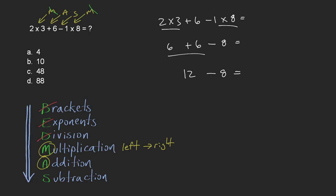And so what we've done is we've dealt with our multiplication here, our addition here, now we're going to do subtraction. And when we do 12 minus 8, we get 4, and so the answer is a.